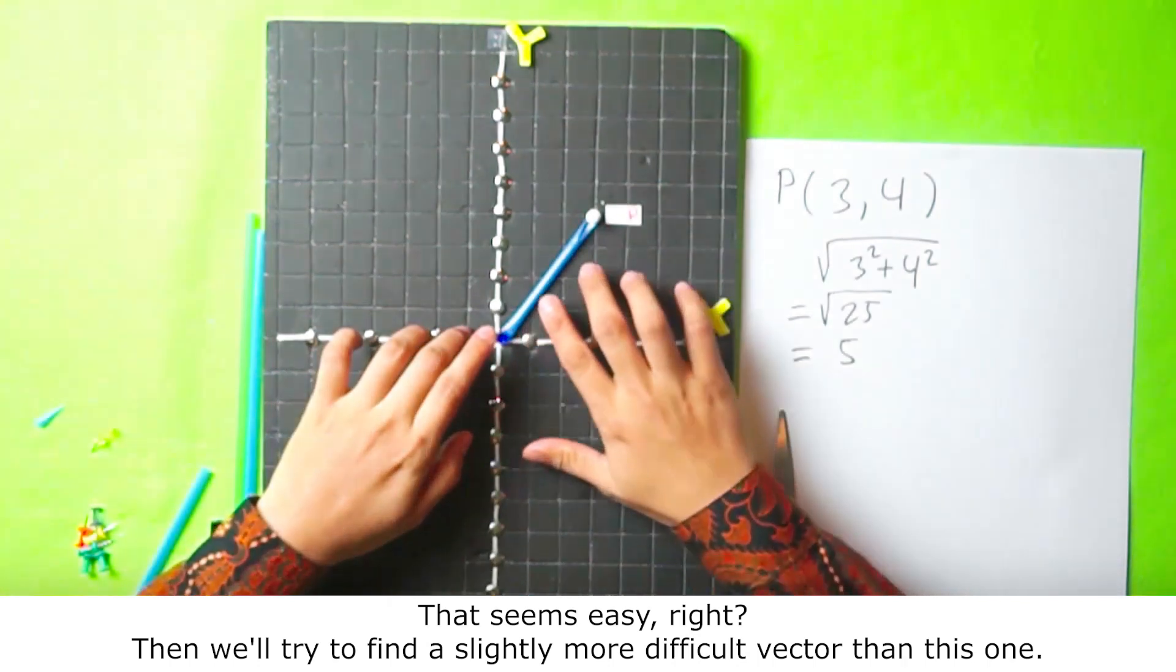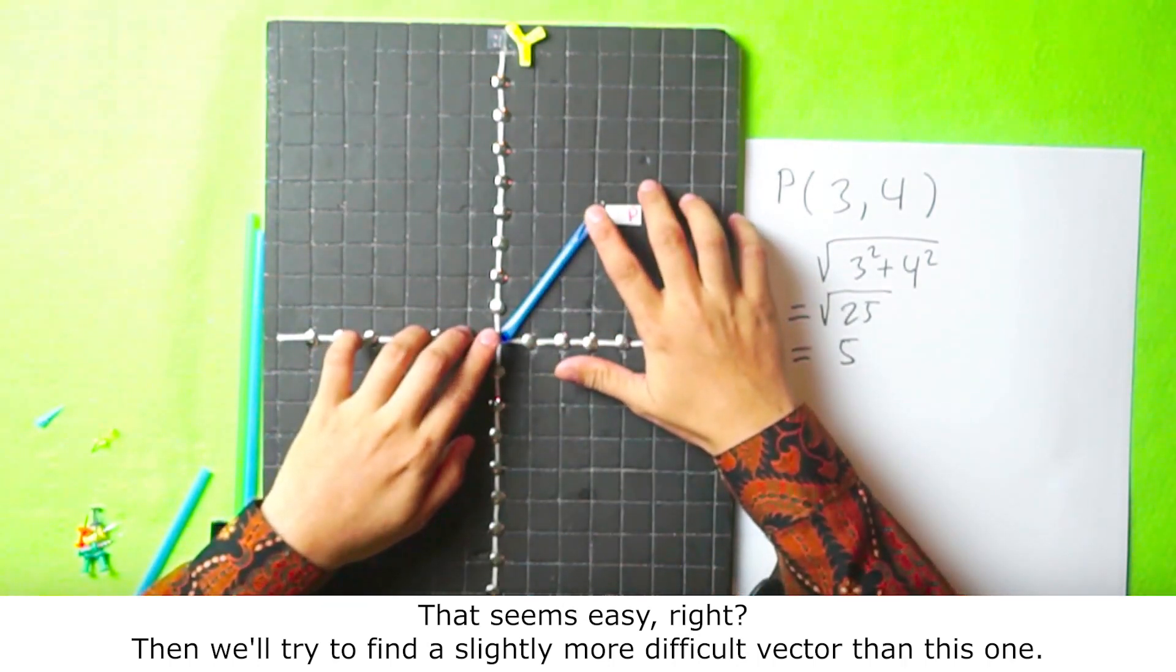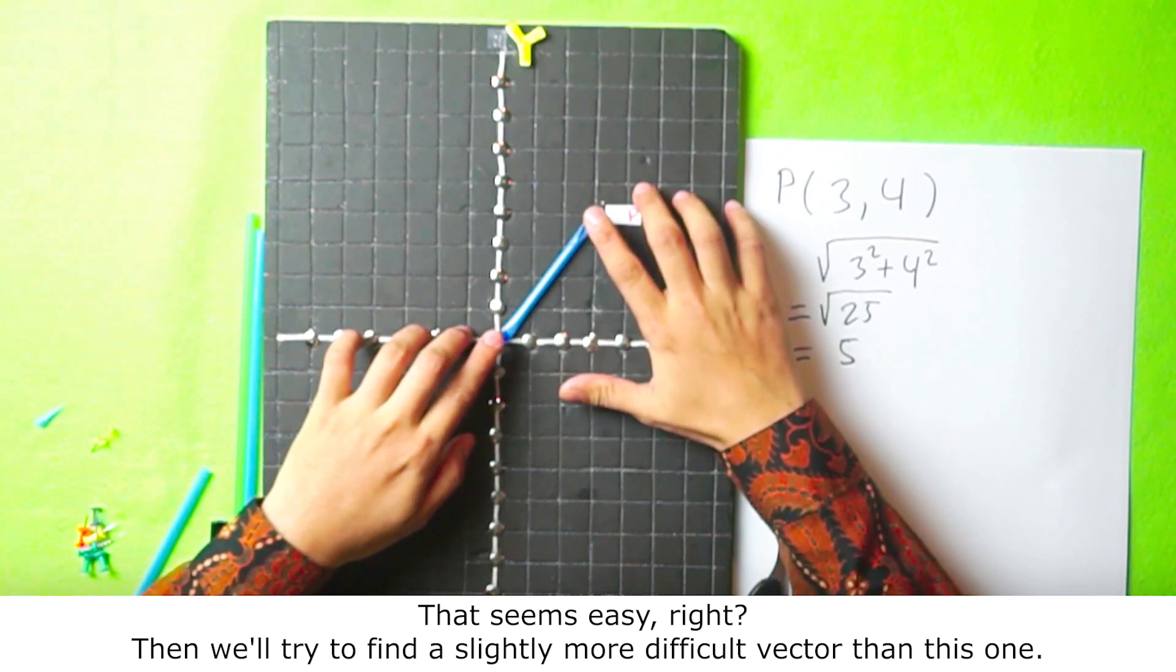That seems easy, right? Then we'll try to find a slightly more difficult vector than this one.